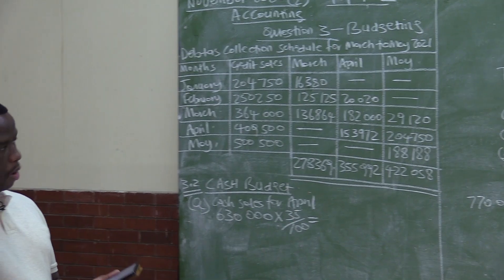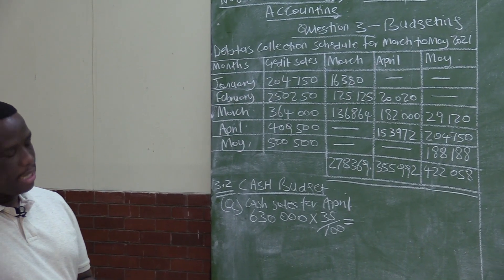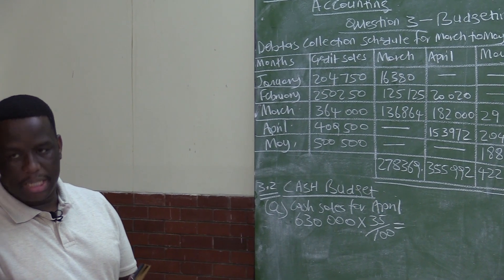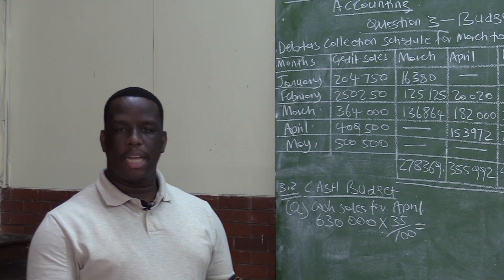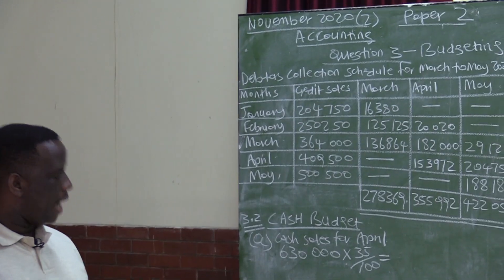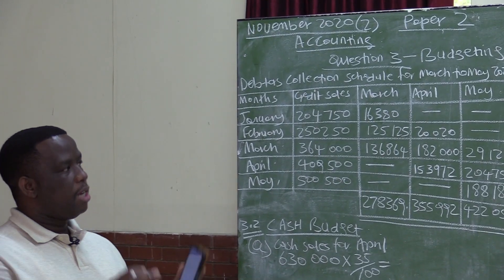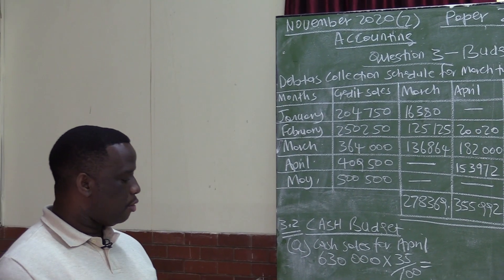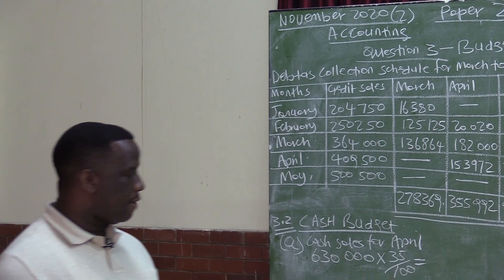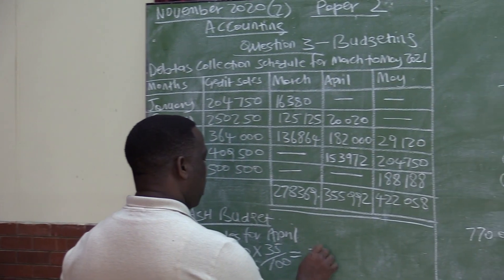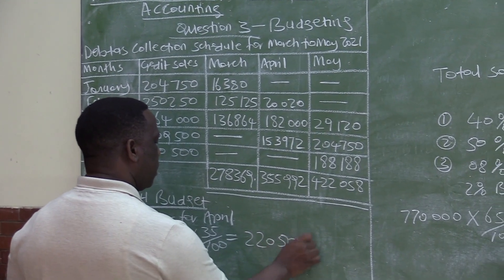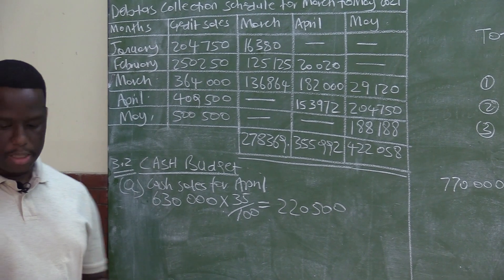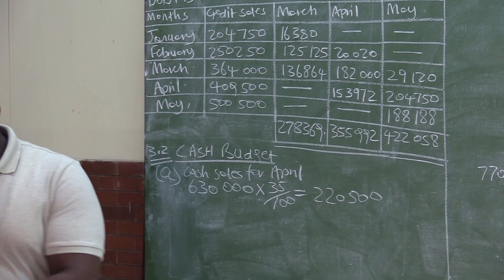Where are we getting the 35%? We are getting it from the information which says credit sales are expected to be 65%. If credit sales are expected to be 65%, then cash will be 35% because credit sales and cash sales combined should give you 100%. So 630,000 multiplied by 35% gives cash sales of 220,500.